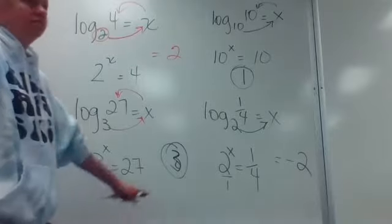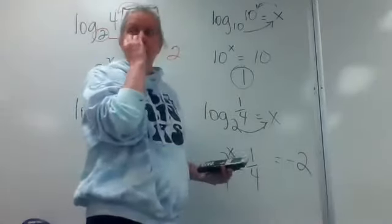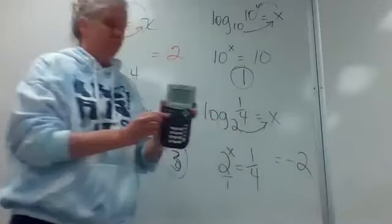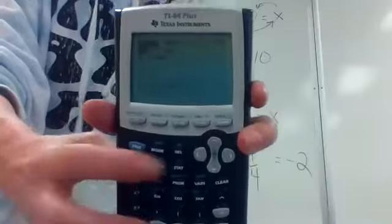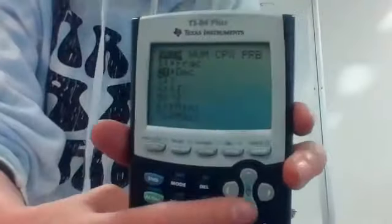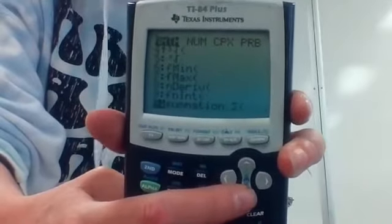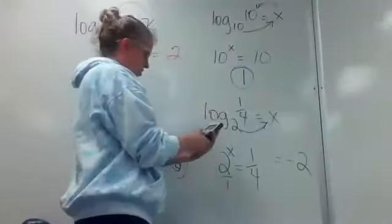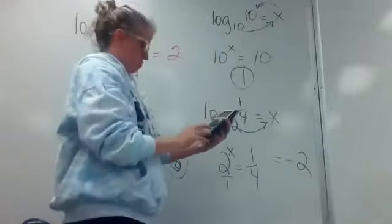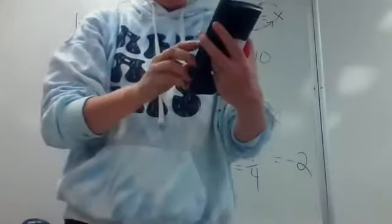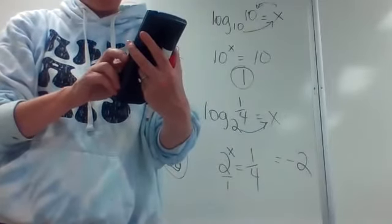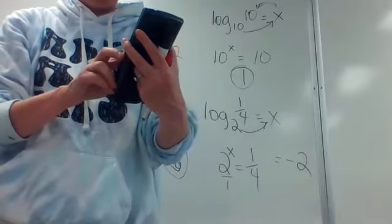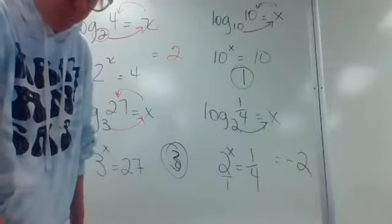You can also put every one of these in your calculator using that log base function. Go to math, scroll down to log base, hit enter, type in 2 in the base spot, arrow over, type 1/4 in parentheses, and enter. There's your negative 2. You can push all of these in the calculator.